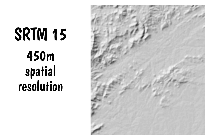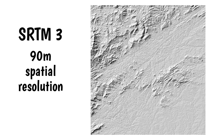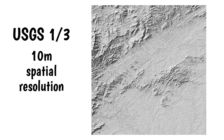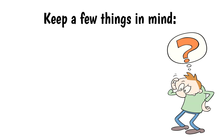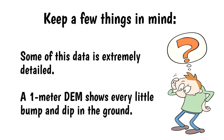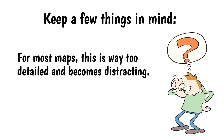Here are some examples of the same area of Western North Carolina sampled at different resolutions. I've run the DEM file through QGIS to turn them into shaded relief. You can clearly see the increase in the level of detail as the spatial resolution changes. Before you get the idea that higher resolution is always better, keep a few things in mind. Some of this data is extremely detailed — a 1 meter DEM shows every little bump and dip in the ground. For most maps, this is way too detailed and becomes distracting.